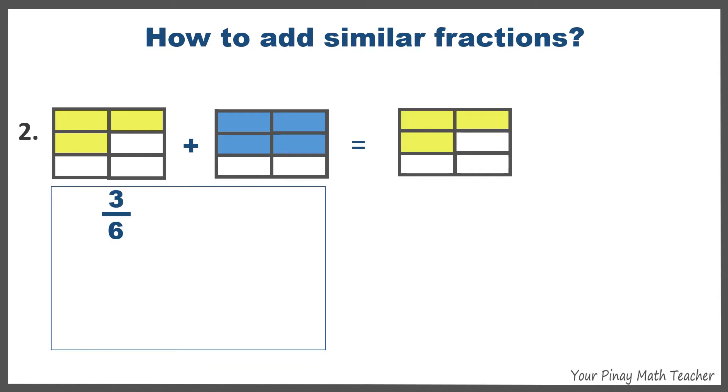Number two, 3 sixths plus 4 sixths is equal to 6 out of 6, as shown in the figure above, plus 1 sixths, which also gives us 7 sixths.